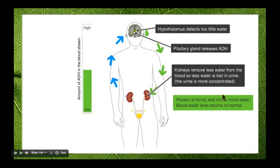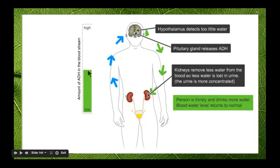When a person is thirsty and drinks more water, that helps to increase the amount of water in the blood, as well as the reduction in urine output. Then all things return to normal and the level of ADH stabilises.